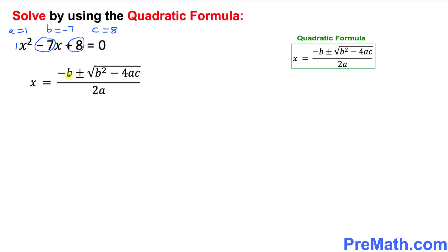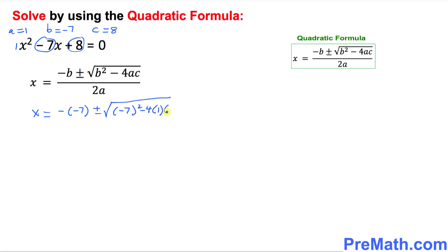Let's fill in the blanks. Wherever you see a, b, and c values, just put them into the quadratic formula. So x equals negative b — and b is negative 7 — plus or minus the square root of b squared, which is negative 7 squared, minus 4 times a (which is 1) times c (which is 8), all divided by 2 times a (which is 1).